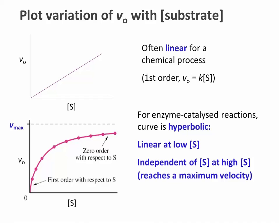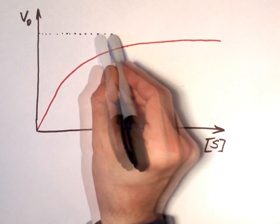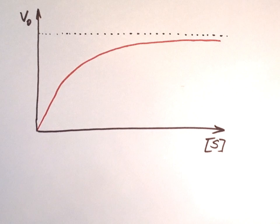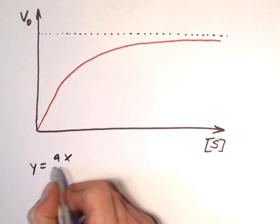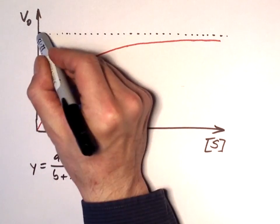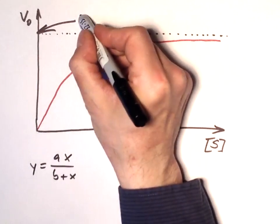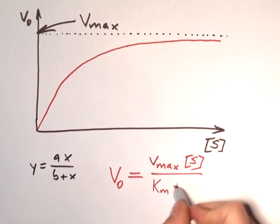This behavior comes from the fact that the reaction happens in the active site of an enzyme. This kind of curve, a so-called rectangular hyperbola that gets ever closer to a maximum value on the y-axis, is typically described with an equation of y equals ax over b plus x. For very large x, meaning much larger than b, the two x terms cancel each other out, and y equals a. In our case, that value is the maximal velocity, Vmax. The other value, b in this equation, is Km, the Michaelis constant.